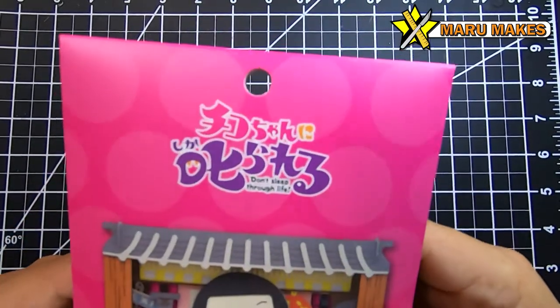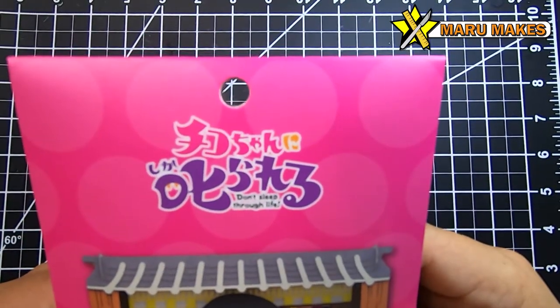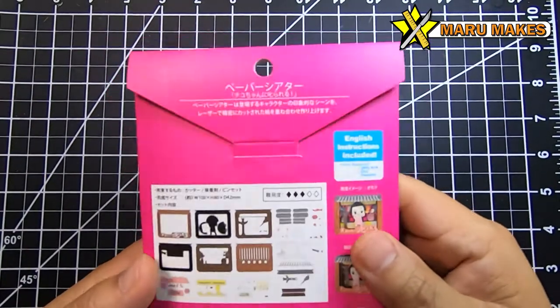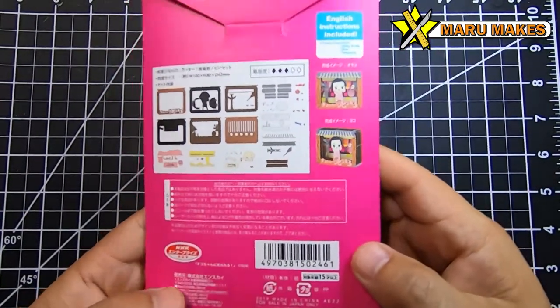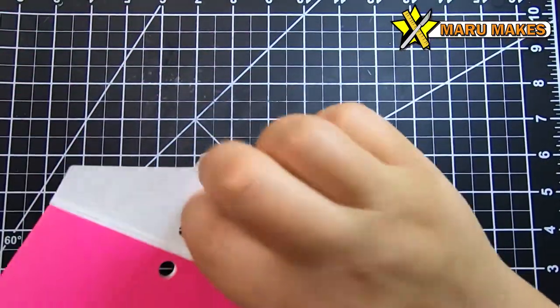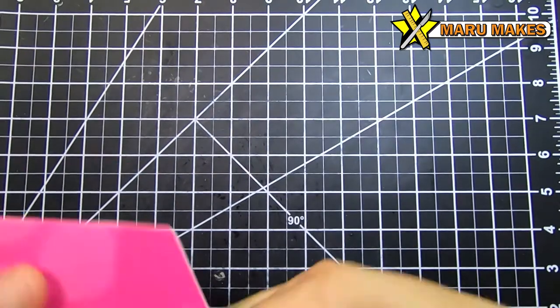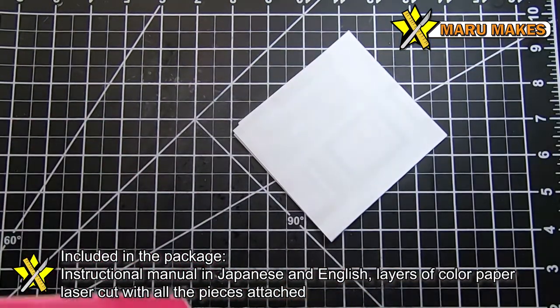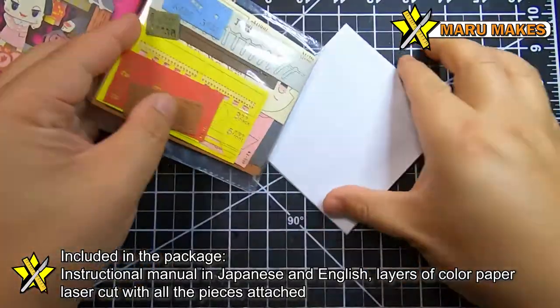This one is going to be of Paper Theater by N-Sky, and this is PT-153 Chiko-chan. The Japanese title is actually Chiko-chan-ni Shikara-eru, and it is actually of an NHK TV show. I originally thought that this was an animation kind of like for kids or something, and I was actually totally wrong when I started looking into what this show was about.